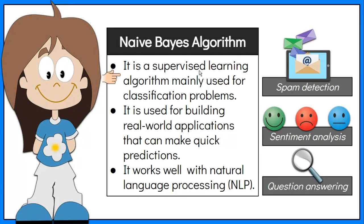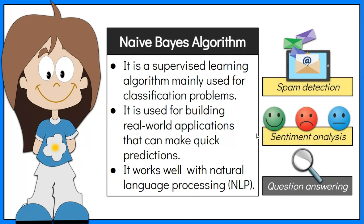Naive Bayes is a supervised learning algorithm mainly used for classification problems. It is the algorithm of choice for building real-world applications with fast machine learning models that can make quick predictions and respond to users' requests instantaneously. It works well with natural language processing or NLP problems such as spam detection, sentiment analysis, and question answering.